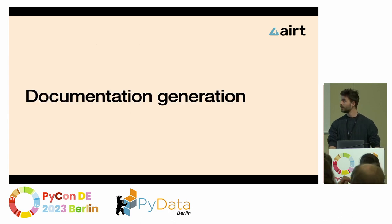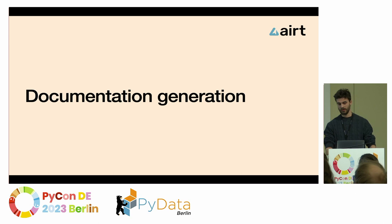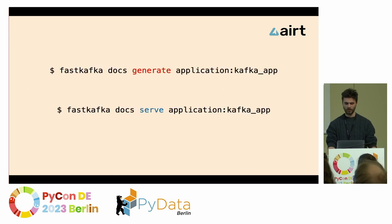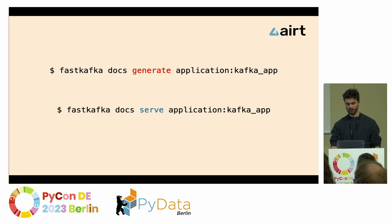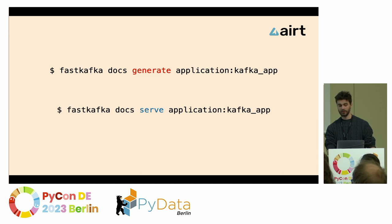After your application is generated and tested, you might want to generate documentation for it. FastKafka comes with a CLI — when you install it, you get the `fast-kafka docs` command, with which you can generate and serve documentation in AsyncAPI format. The generator produces a YAML file which you can copy, paste, and use on the AsyncAPI website.